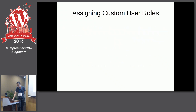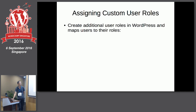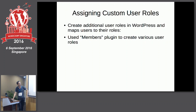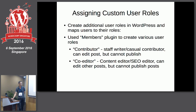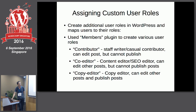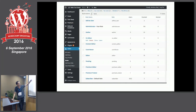There are a few things we do. First, we assign custom user roles — we create additional user roles and map users to their role. The plugin we use is Members, a very popular plugin. We have a contributor: they can edit posts but cannot publish. We have a co-editor — the content editor and SEO editor — they can edit other people's posts but cannot publish. And the last stage is the copy editor: they can edit other people's posts and they can publish.